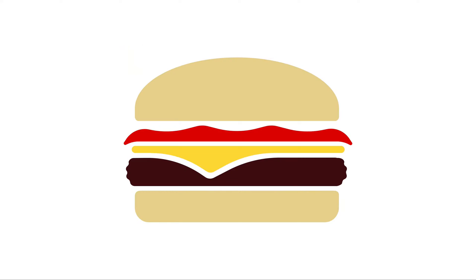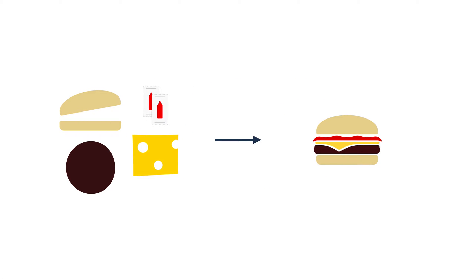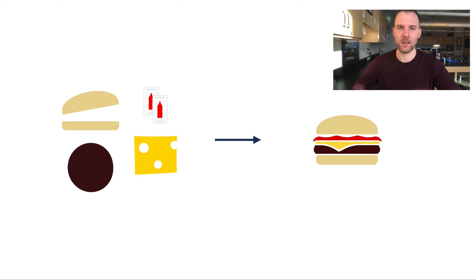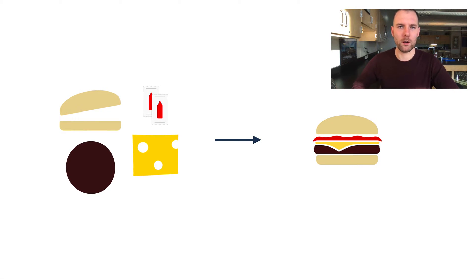Let's start with this — here's a fake hamburger, actually a cheeseburger with ketchup on it. If you look at the ingredients for this, we need two buns, a burger patty, a slice of cheese, and two packets of ketchup. Those are the ingredients to make one burger.